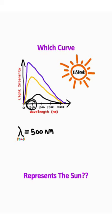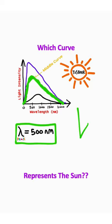So if I go to my graph and look at the 500 nanometer mark and look at which curve peaks at 500 nanometers, it looks like it's going to be this yellow curve right here. So that means this middle black body curve represents the sun.